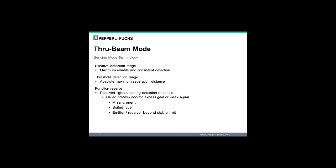Terminology used with through beam sensors: effective detection range is the maximum emitter-receiver separation distance for reliable and consistent detection. Threshold detection range is the absolute maximum emitter-receiver separation distance. Function reserve indicates when the light level at the receiver is at or nearing the detection threshold — commonly referred to as stability control, excess gain, or weak signal. This can indicate misalignment, a soiled optical face, or that the emitter-receiver distance is beyond the stable limit.